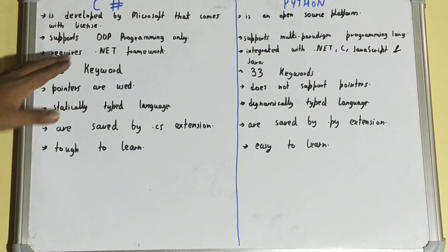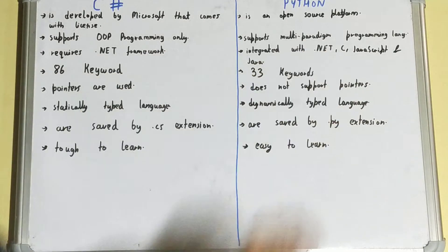C# requires .NET framework, whereas Python is integrated with .NET, JavaScript, Java, and C also. This gives programmers more freedom in terms of programming - they can go with multiple approaches and multiple types of programming.